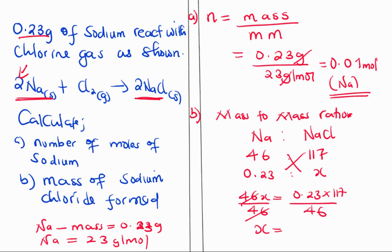0.23 divided by 46 times 117, this is giving me 0.585 grams of sodium chloride.